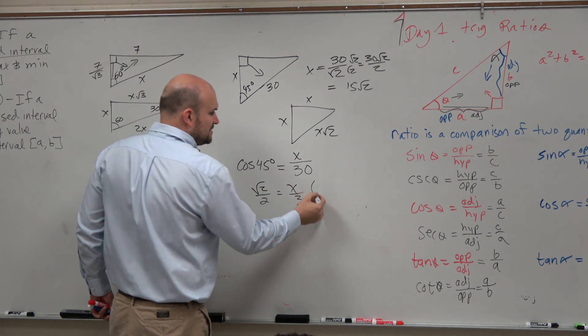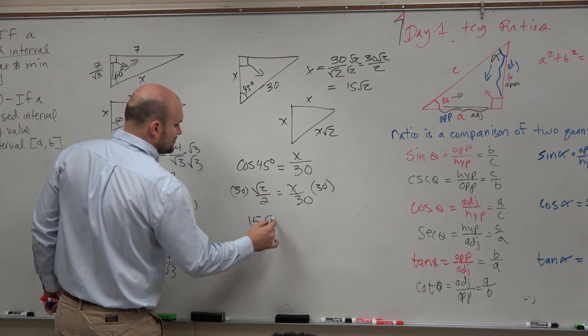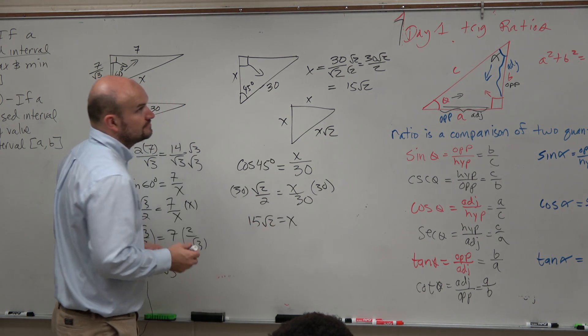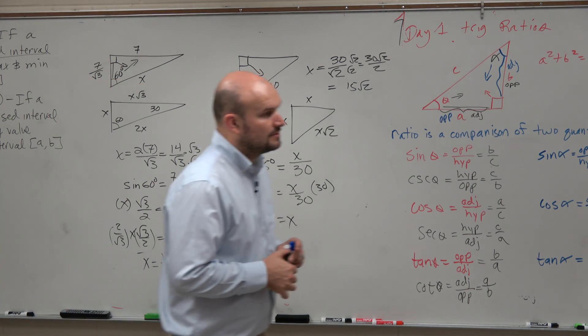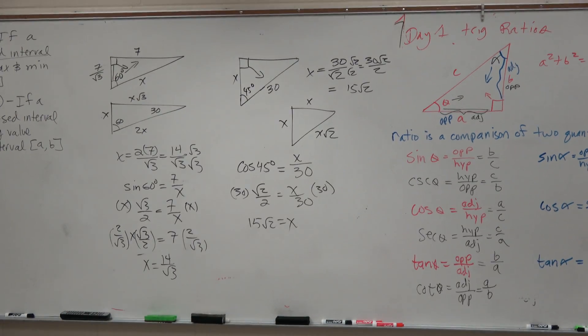Now, to solve for x, we just multiply by 30 on both sides. 15 square root of 2 equals x. So not being able to use technology can be very helpful.